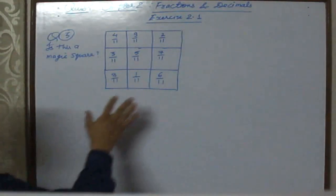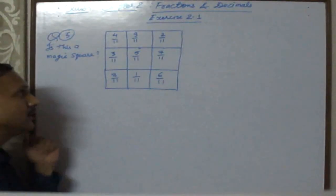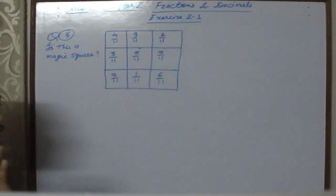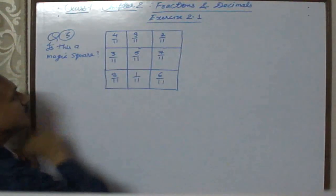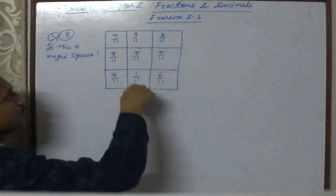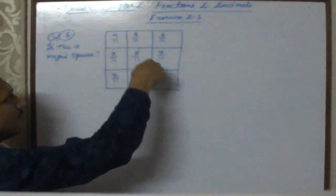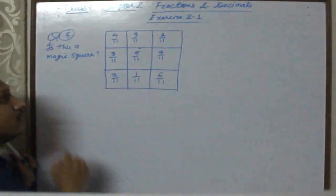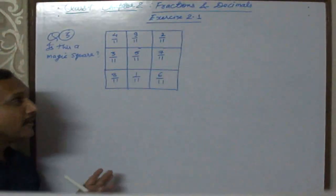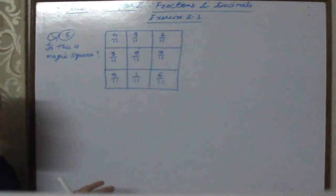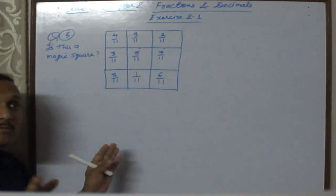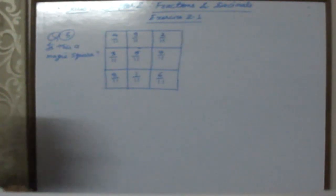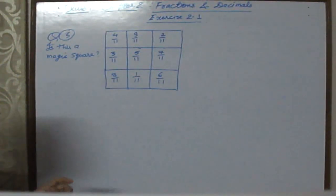Question number 3: Find out whether this is a magic square or not. A magic square is a square where the sum along all rows, all columns, and both diagonals remains the same. There are three rows, three columns, and two diagonals to check.